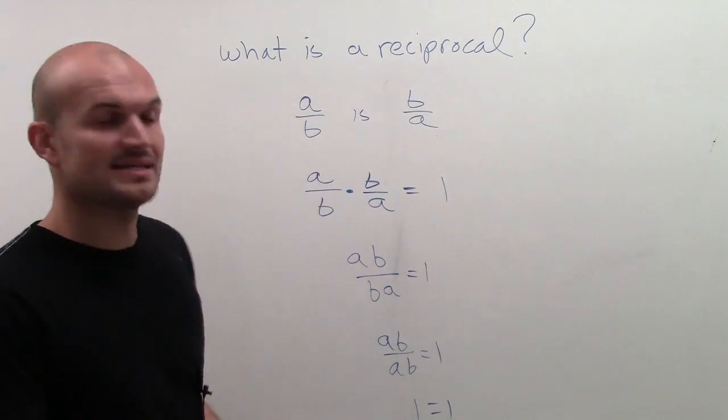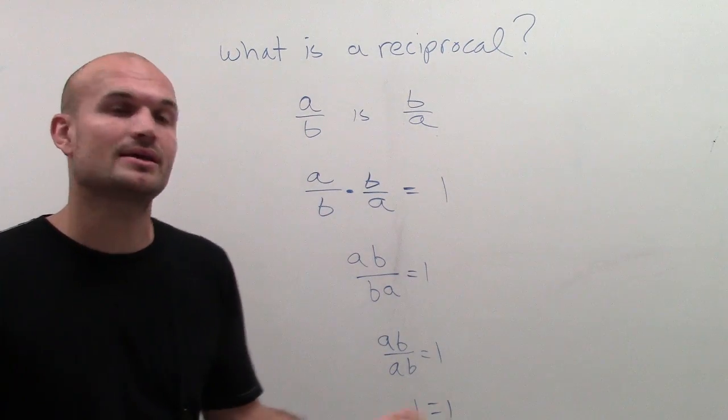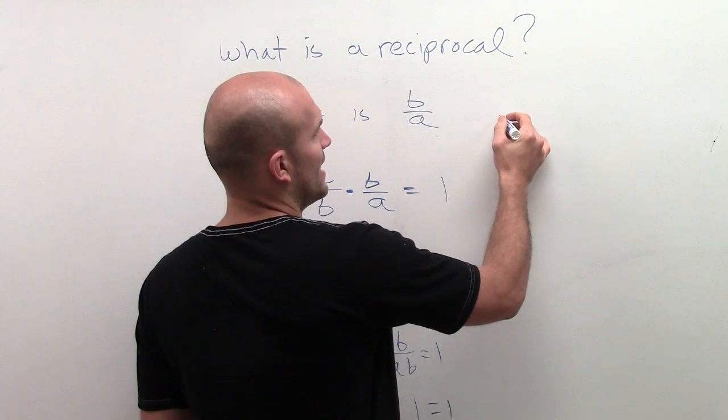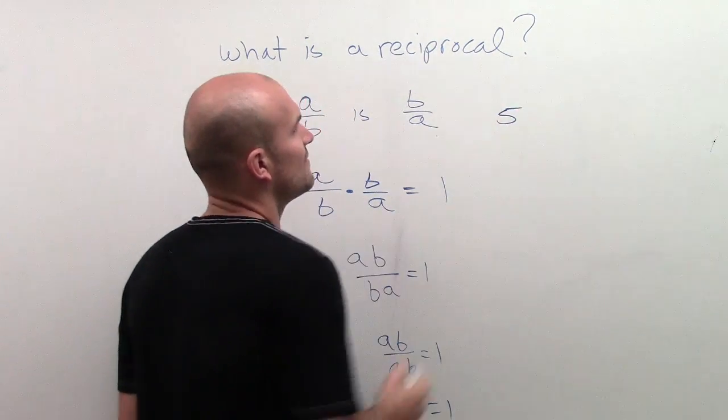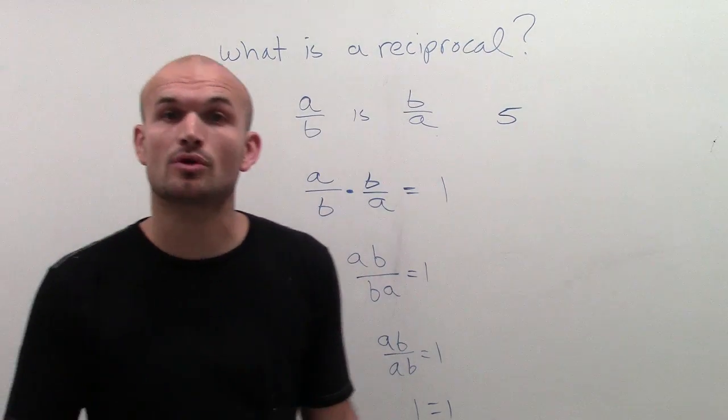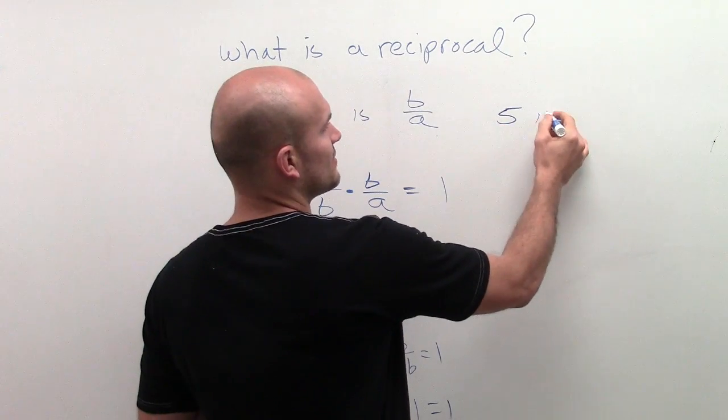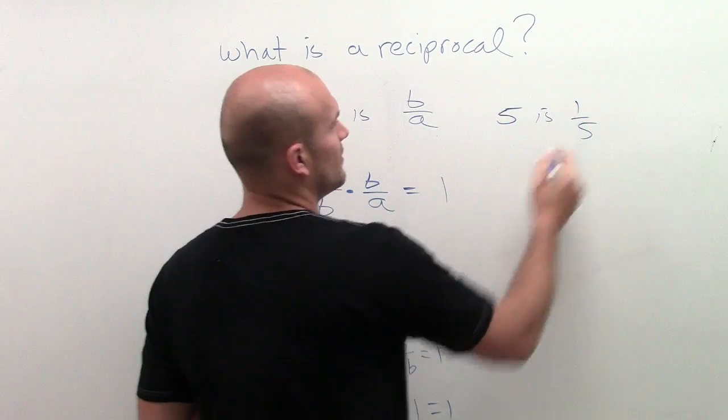So that's kind of your basic understanding of reciprocal. It's just your multiplicative inverse. But what happens if I have just the number like 5? What is going to be the reciprocal of 5? Well, we need to look at the multiplicative inverse. So if it's 5, the reciprocal is going to be 1 fifth.